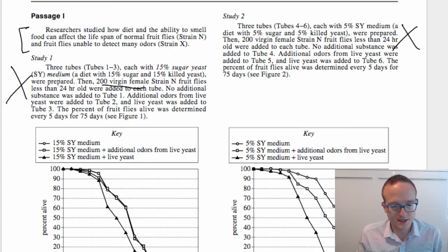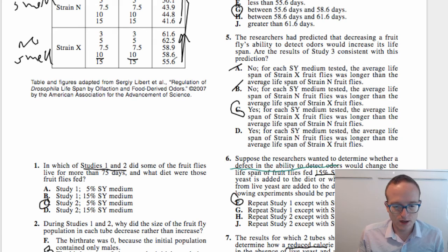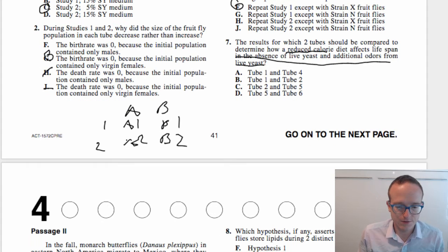Okay, this is written very confusingly, but basically you don't want any extra stuff. It's just reduced calorie diet. So if SY is the sugar yeast medium, and that's something to do with food, this study two is the reduced calorie version. Let's see where we can find tubes. Okay, here we go. Immediately tubes one through three, tubes four through six. So no additional substance was added to tube one, that means that's the one we're interested in. Doesn't have any extra odors, doesn't have any extra yeast stuff. So we want tube one from here, and then over here we want the one without any extra stuff in it, so that's again tube four. So we want to compare one to four, and that cancels out all the other stuff. It's just comparing the effect of 15% versus 5%.